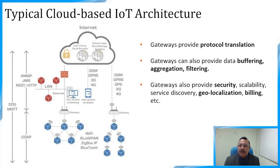What is a gateway? An IoT gateway plays a crucial role in facilitating communication between end devices and the central cloud. Its primary purpose is to manage and optimize data flow between the device and the cloud. A gateway facilitates protocol translation by acting as an intermediary between IoT devices using different communication protocols, allowing integration of diverse devices within an IoT ecosystem. Gateways can also provide preprocessing, security, scalability, service discovery, geolocation, and billing services.